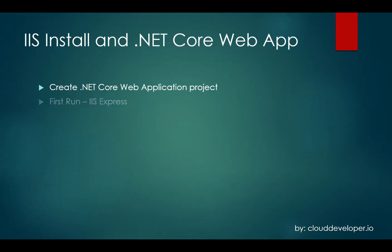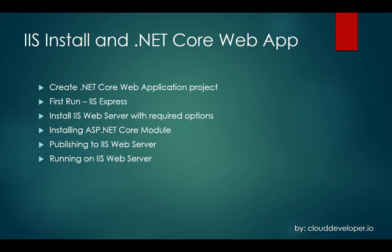We're going to start off with creating the .NET Core web application project, then run that using Visual Studio Community Edition on IIS Express. Then we're going to show you how to install IIS web server itself on Windows 2016, installation of the ASP.NET Core module required to run the .NET Core web application through IIS, and how to publish from Visual Studio to IIS using the publishing mechanism.